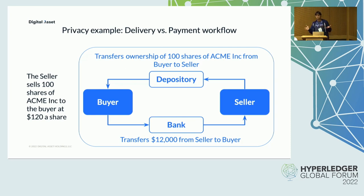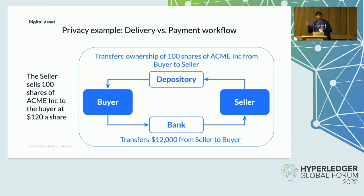In this business transaction, the share and cash transfers should be processed atomically so that the entire transaction either succeeds as a whole or fails as a whole. The state where shares have been transferred and cash hasn't — or vice versa — should never be possible; this operation should be committed to the ledger as a single transaction. However, the bank should only see that the buyer transfers $12,000 to the seller, and the depository should only know that the seller transfers 100 shares of Acme Inc. to the buyer.